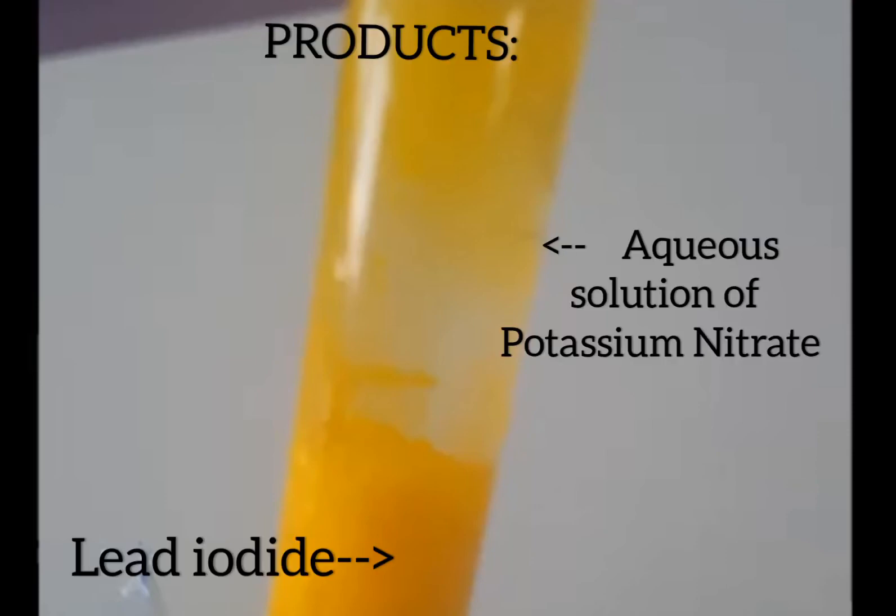The reactants are lead nitrate and potassium iodide; the products are lead iodide and potassium nitrate. The observation is that a yellow precipitate is formed due to the formation of lead iodide, and a colorless aqueous solution of potassium nitrate is formed on top. This is an example of a double displacement reaction as well as a precipitation reaction.